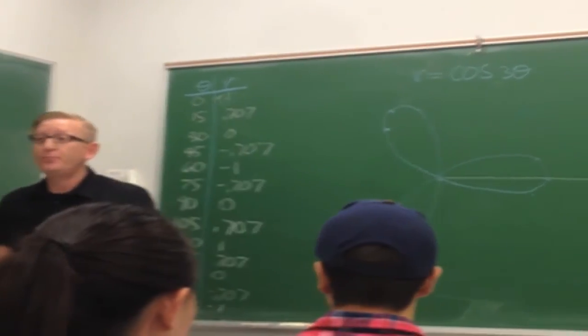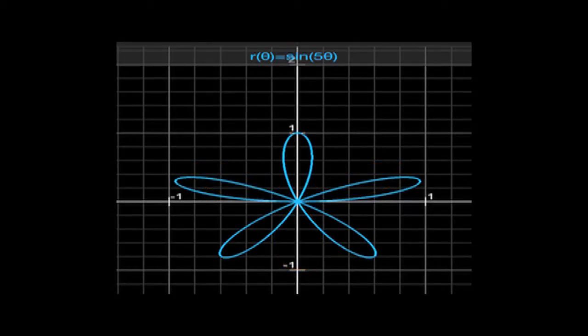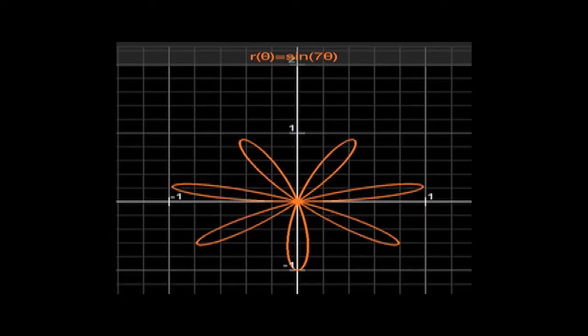And that's a 3-leaf polar rose. When the argument has three times, it's this guy because it has three petals. When the argument is five times, it's five petals. When the argument is seven times, it's seven petals. So when the multiple is odd, you have that number of petals.